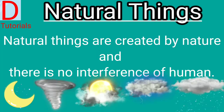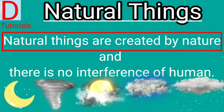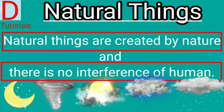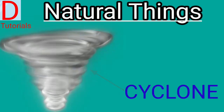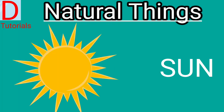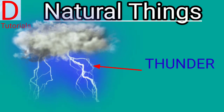Natural things are those things which are created by nature and there is no interference of human beings. Kids, what do you see on screen? This is the moon. See the cyclone, sun, rain and thunder. All are natural things.